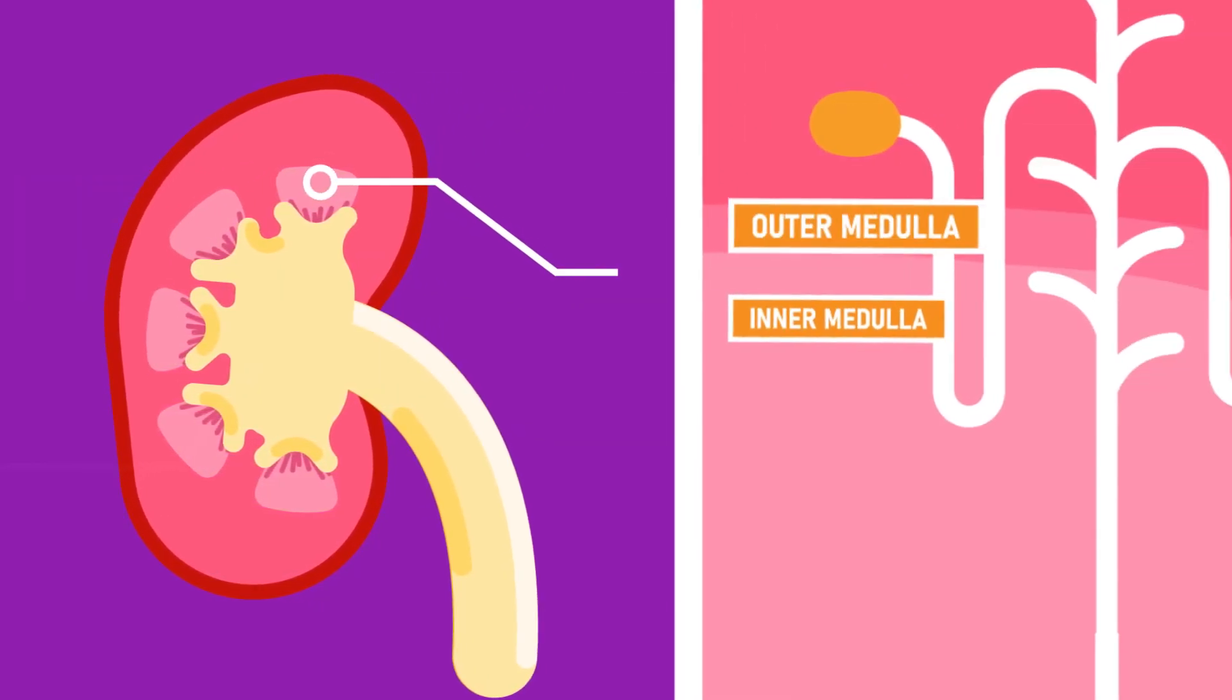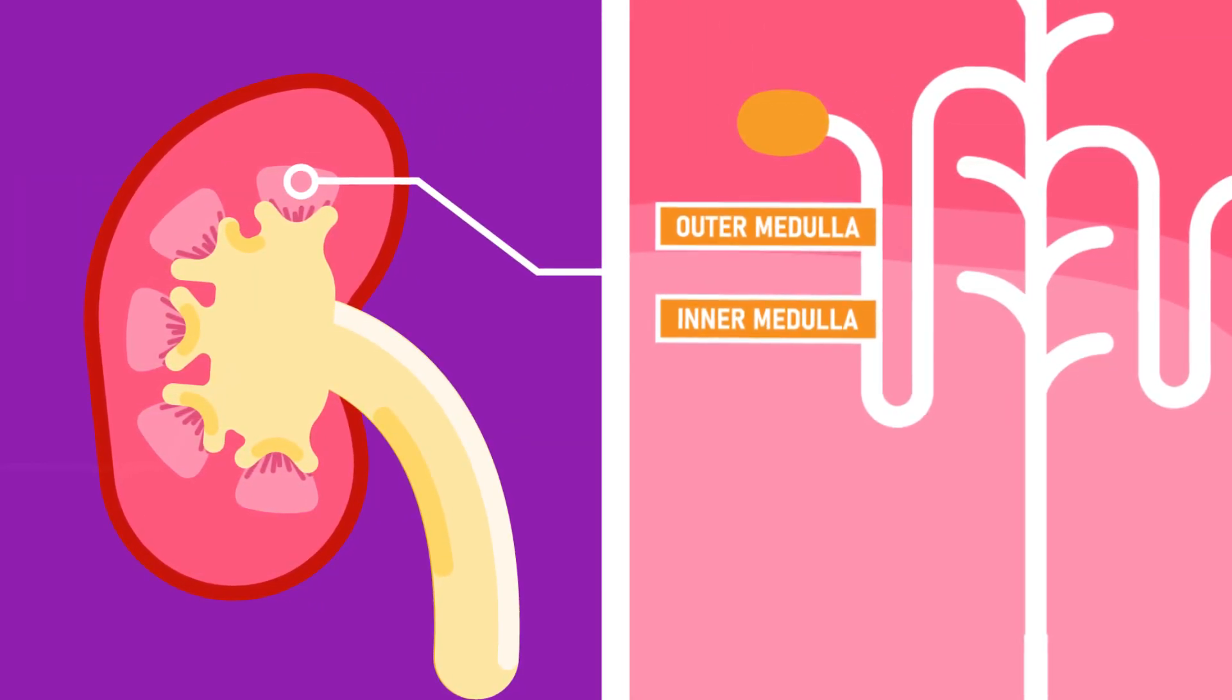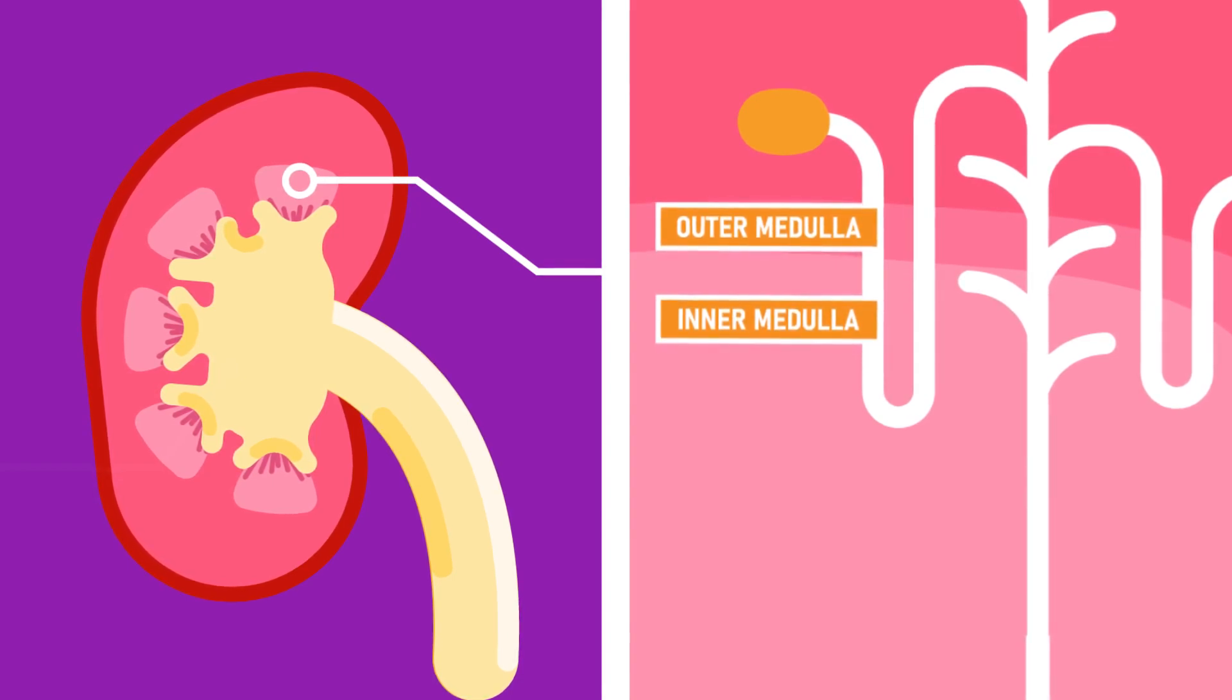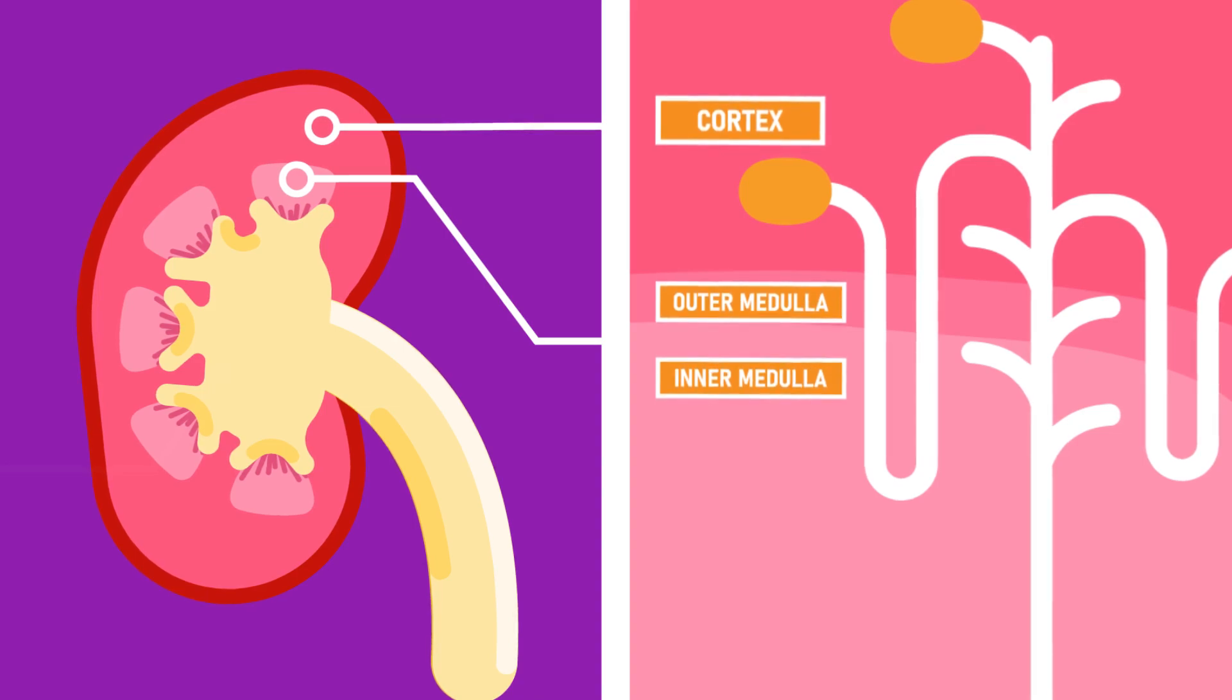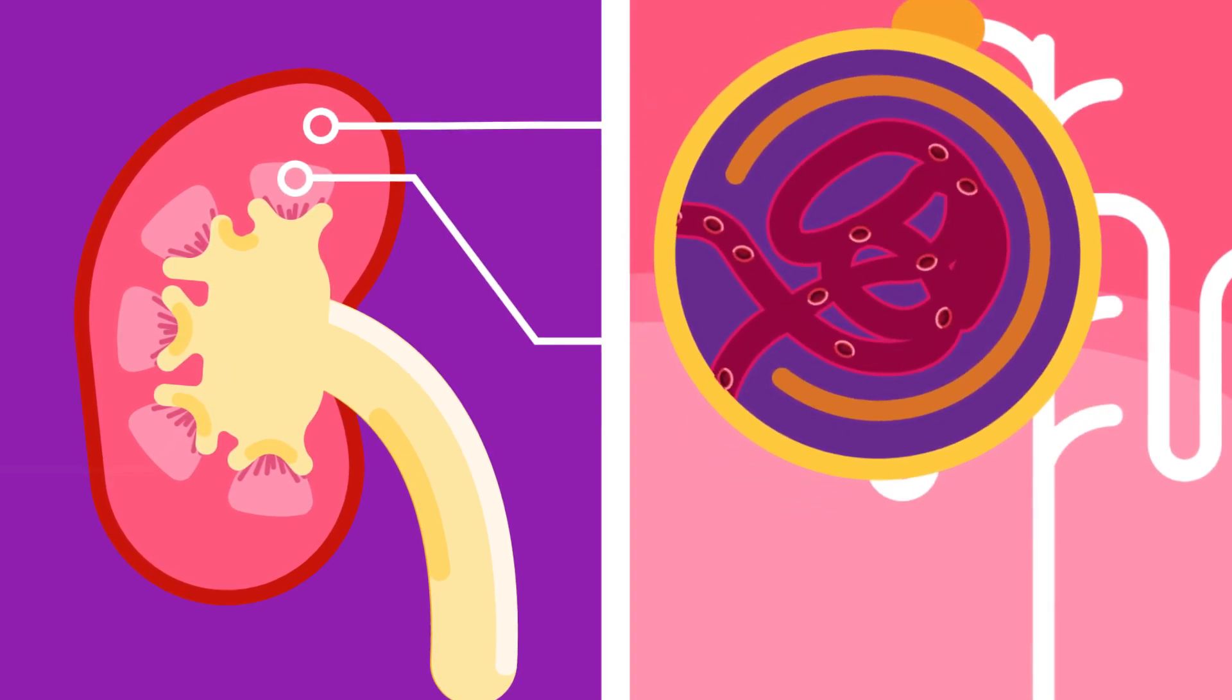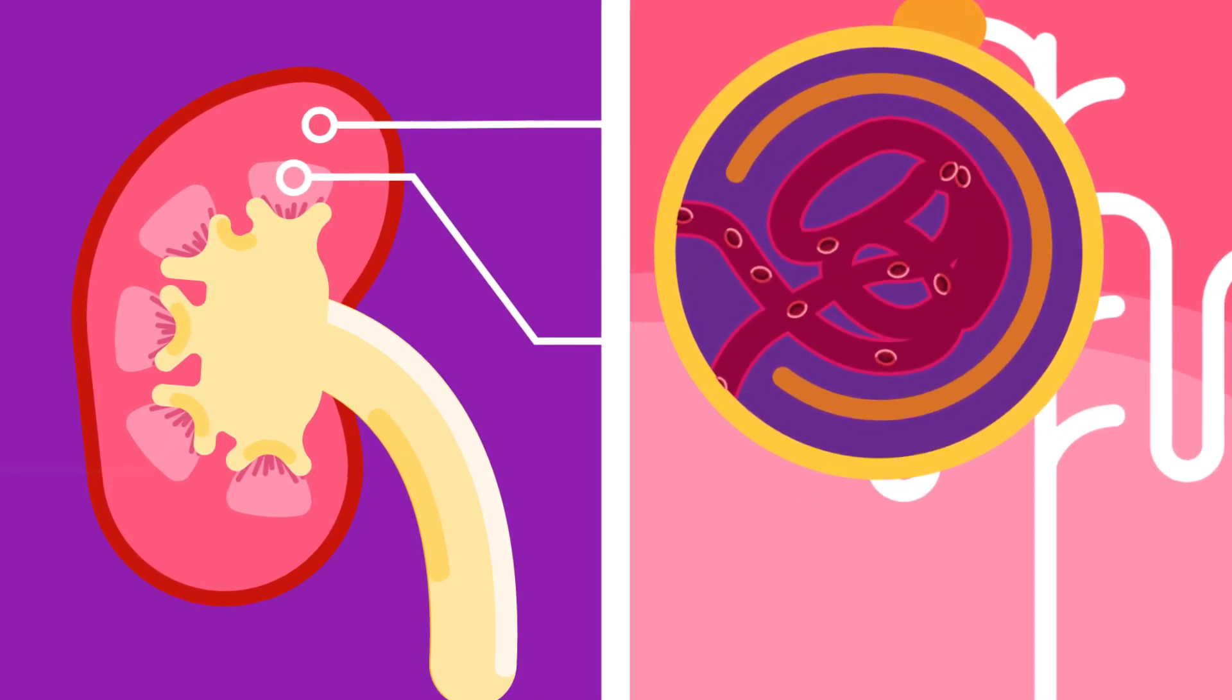The inner medulla is lighter in color and contains loops of Henle and the collecting ducts. The outer cortex contains Bowman's capsule and glomeruli. It is dark brown due to the large network of blood capillaries from the glomeruli.